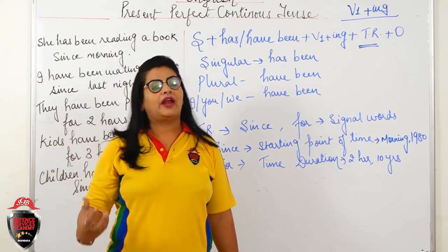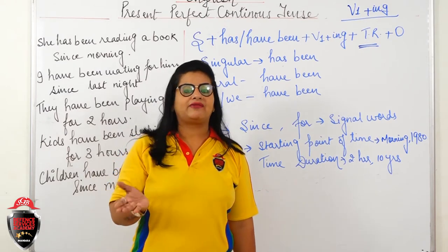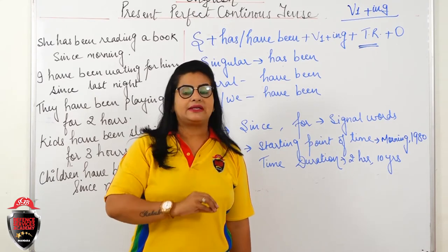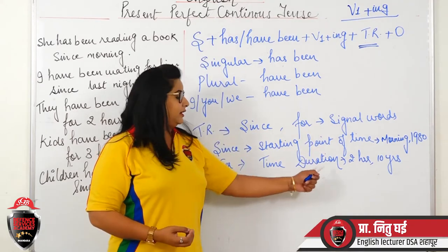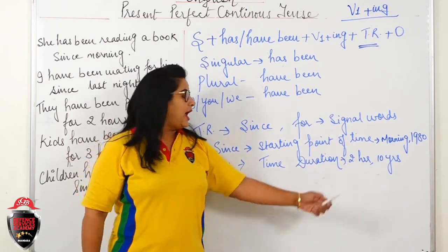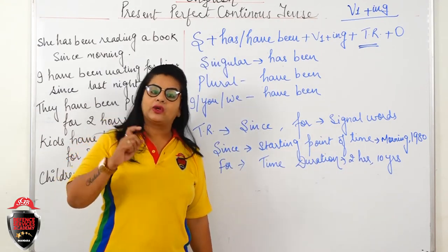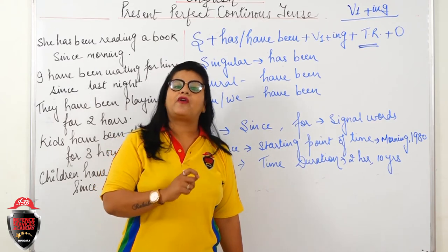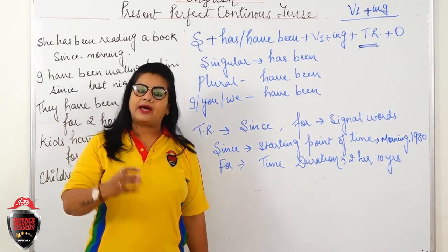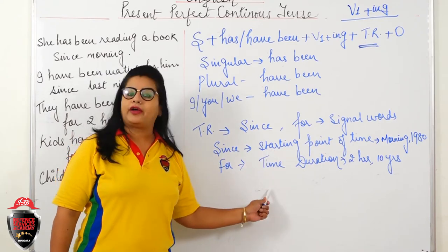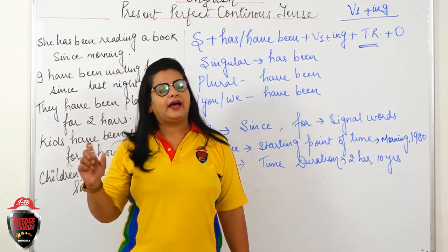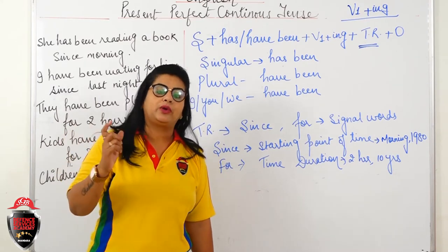The usage of since and for must be done properly — as per the duration or as per the starting point of action. If this is mixed up, there will be an error in your sentence. In NDA, errors come on this: if you use 'since' with a time duration like 'since two years,' that is an error. If you use 'for' with a starting point like 'for morning,' that is also an error. You have to spot such errors in the sentence.